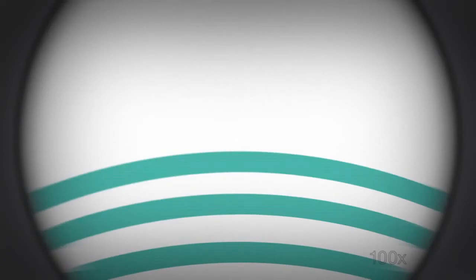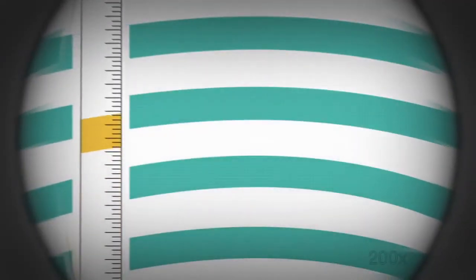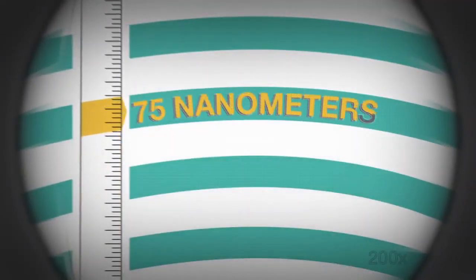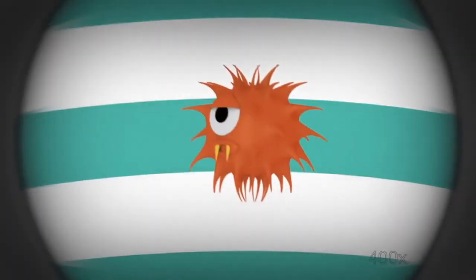On a conventional hard disk drive, data is written in tracks. The closer the tracks, the more data you can fit on a platter. Using today's perpendicular recording technology, data is written in tracks only about 75 nanometers wide. Smaller than a flu virus.